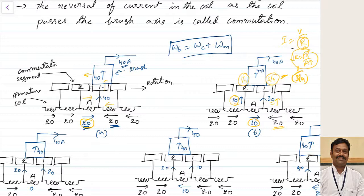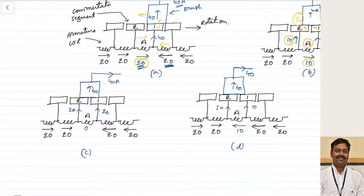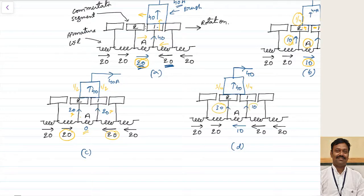The current in the coil undergoing commutation — coil A — is now short-circuited because the two commutator segments are connected through it, so the current is gradually decreasing. As the brush moves further to cover half of each segment, current equally divides: 20 amperes here and 20 amperes there. The current supplied by coil A will be zero here because it is completely short-circuited — the voltage is zero and it cannot pass any current. As the brush moves to one-fourth on segment one and three-fourths on segment two, more current is supplied from segment two side.